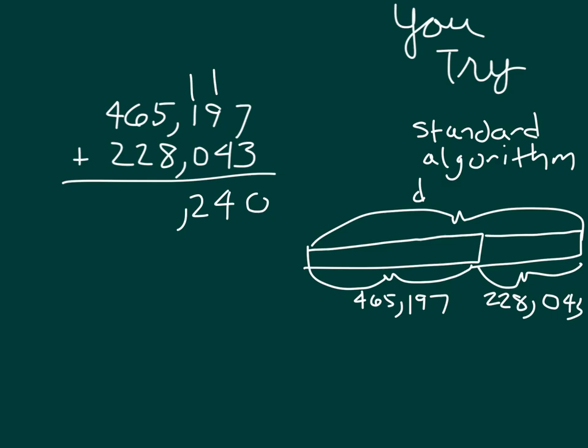As I continue through that problem, you'll notice that my next regroup comes in the ten-thousands place, where I'm adding one ten-thousand, six ten-thousands, and two ten-thousands, to get nine ten-thousands. And in the hundred-thousands place, I have four plus two, equaling six.